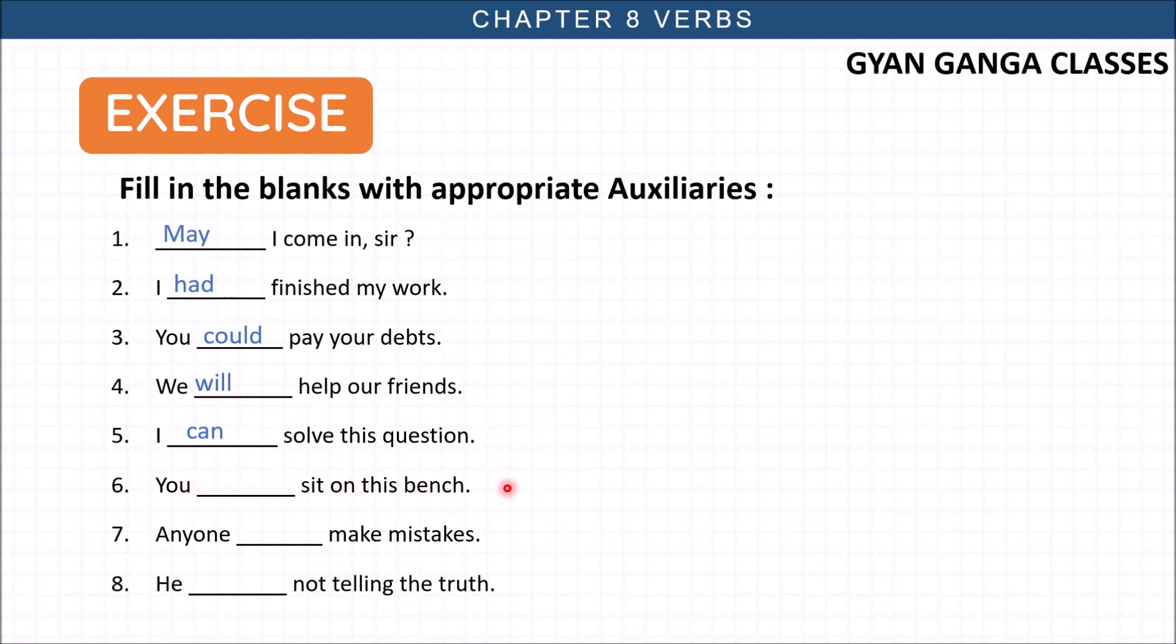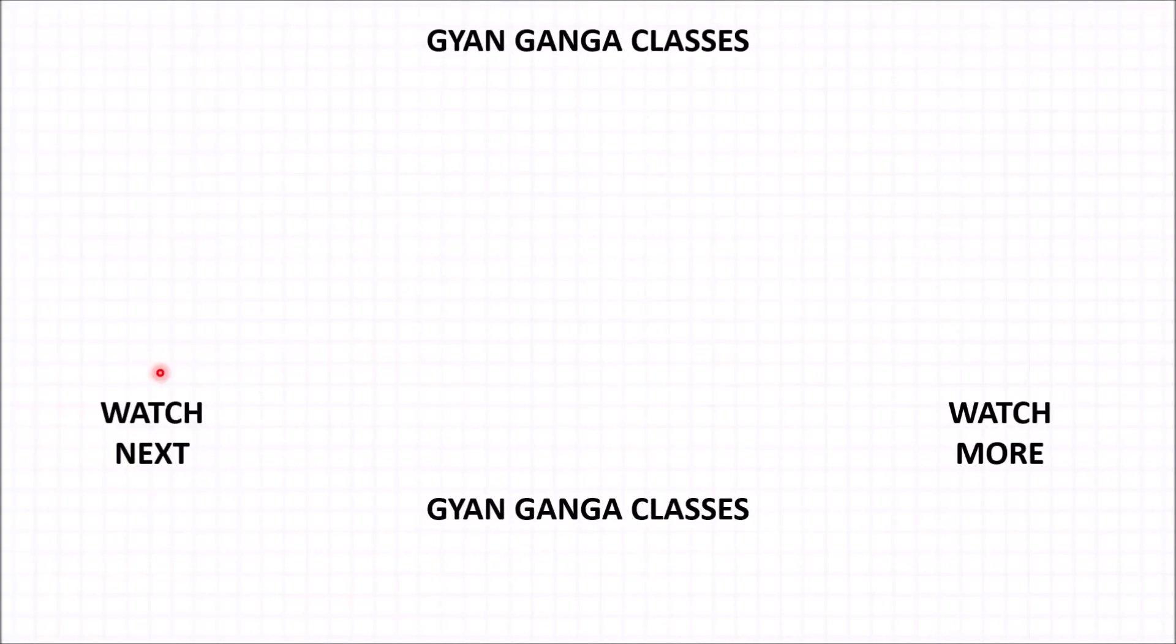So with this we have covered the entire chapter in which we talked about all the verbs, their forms, and their use with tenses, and helping verbs and different types of verbs. I hope you got a clear idea of everything. If you have any queries or confusion, make sure you comment in the comment section and I will answer all your questions. Make sure you like this video and share it with your friends. Also, if you haven't subscribed yet, make sure you subscribe and hit the bell icon.